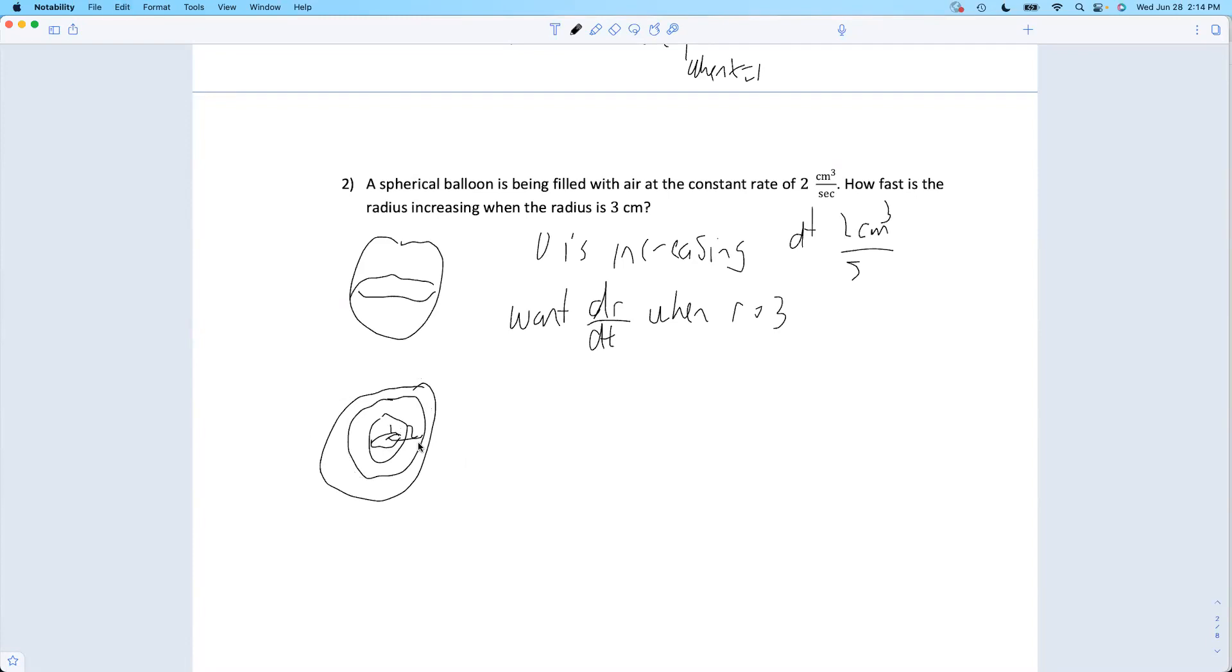Okay, so I've got two variables of interest here. What are my variables? I guess we've got three if we consider time as an independent variable. So we've got time t, the volume v, and the radius r.